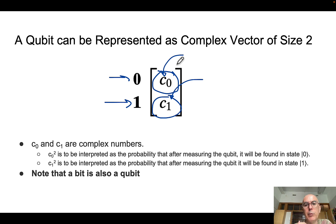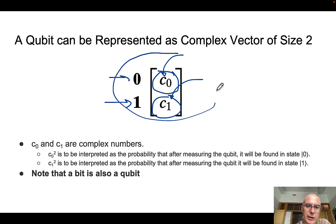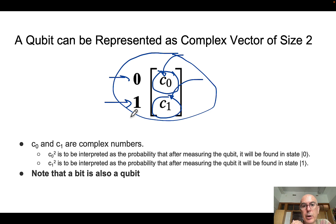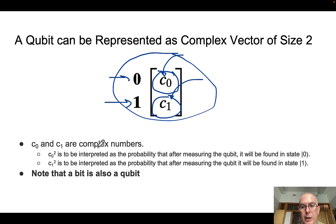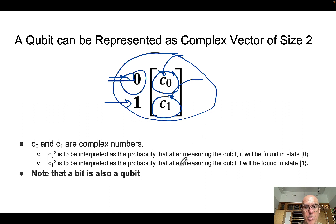In particular, when we are using quantum bits or qubits, we're going to use arrays of the kind you see in this lecture. The important part is that the square of these two numbers can be interpreted as a probability. C0 squared is to be interpreted as the probability that after measuring the qubit it will be found in state 0. On the contrary, C1 squared can be interpreted as the probability of measuring the qubit in state 1.